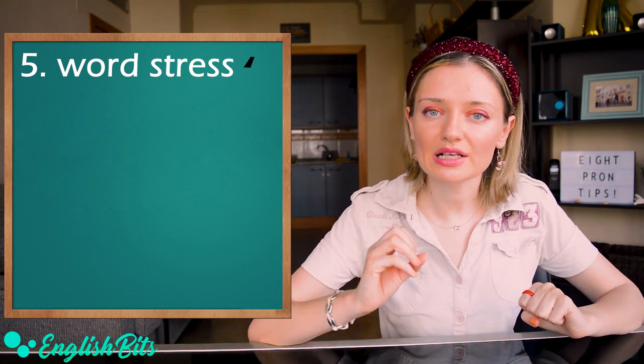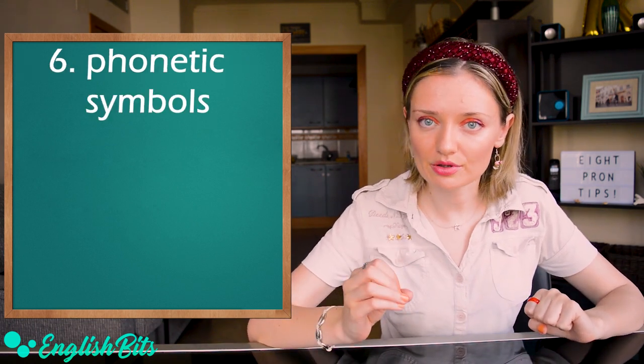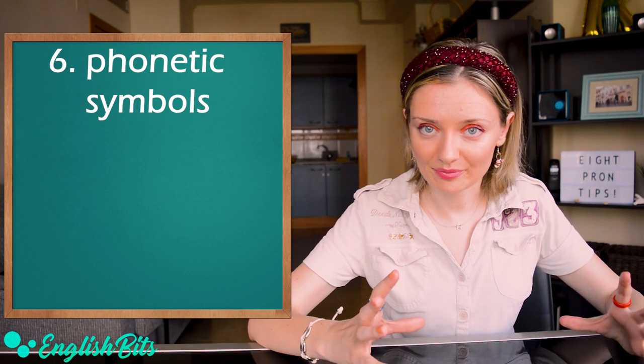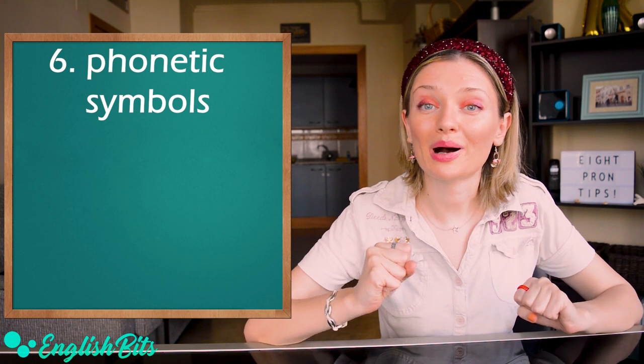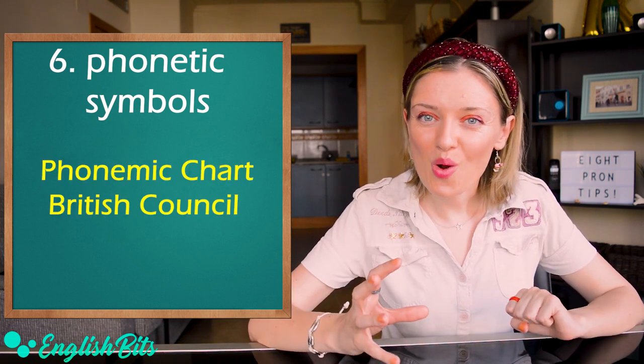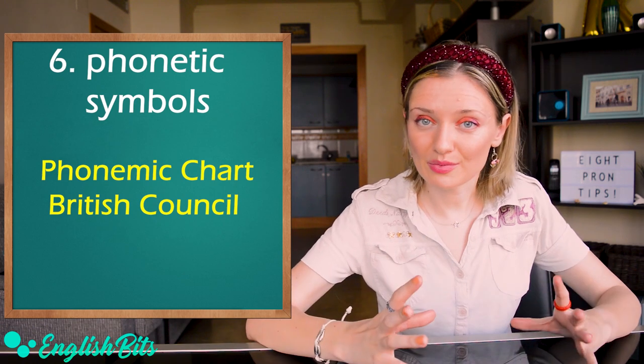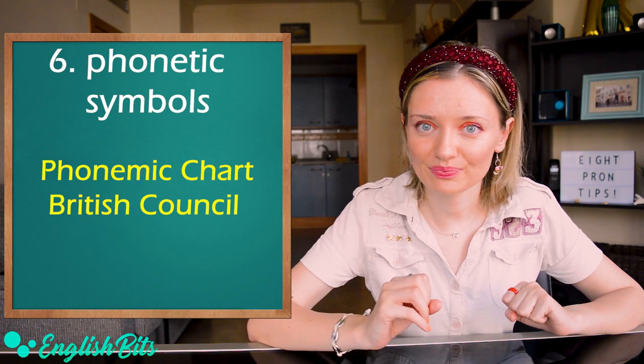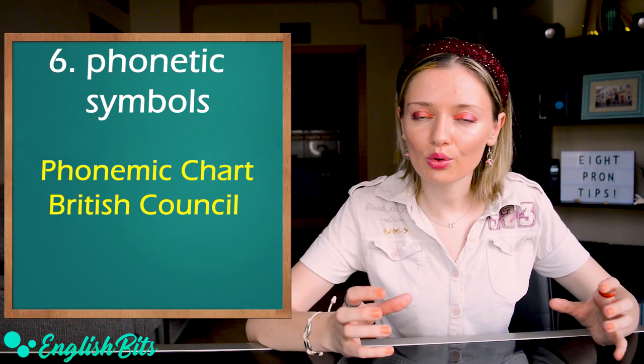My tip number six is learning phonetic symbols that can help you pronounce any word correctly. There is an app by British Council called Phonemic Chart where you can find all the symbols. You can click on them and listen to their pronunciation. Let's continue, two more to go.